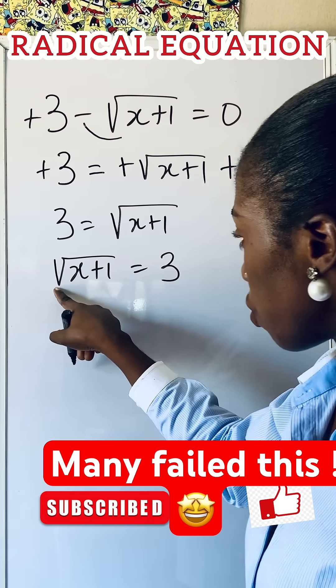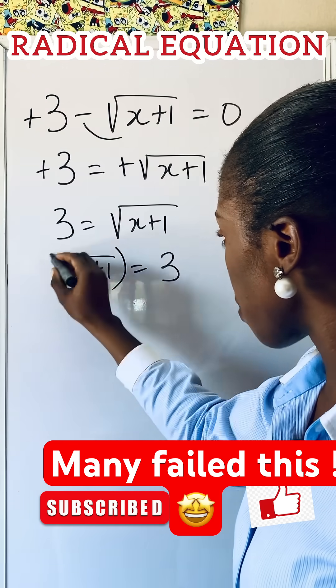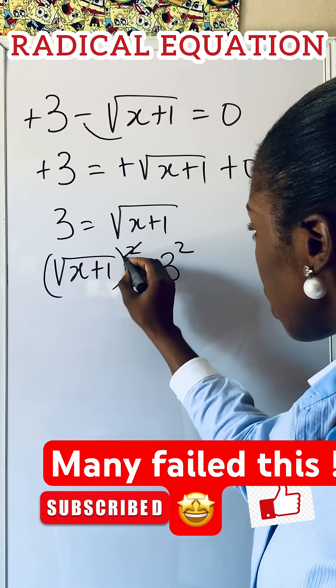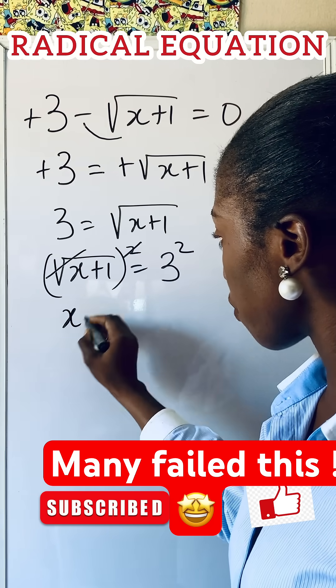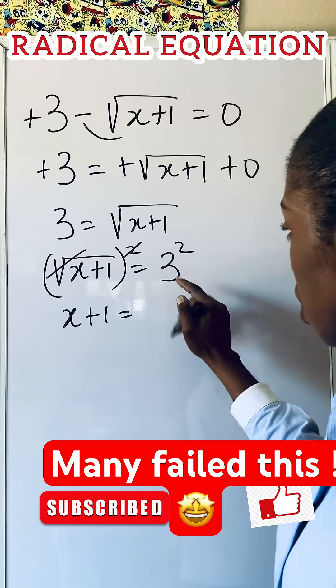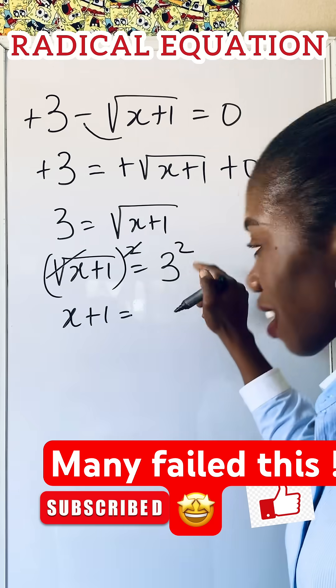Now what do you do? Remove this root, which is square root. You square both sides. And this square will cancel the square root. We have x plus 1 is 3 to the power of 2. It's 3 times 3 to give you 9.